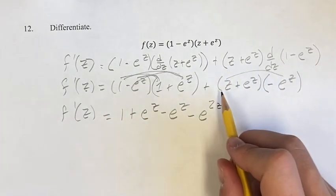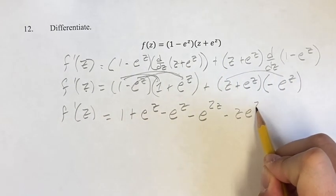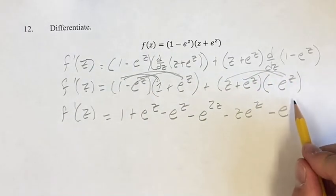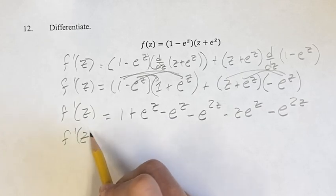Over here, we get minus z e to the z, minus e to the z plus z is again e to the 2z. And now we can combine like terms.